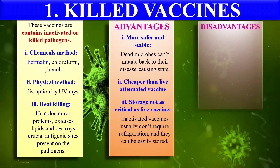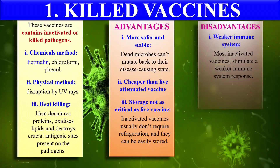Disadvantages: since we are using the killed pathogen, it will not give a strong immune response. It will only develop a weak immune response because the pathogen is in killed form. This is the main disadvantage of killed vaccines — they develop only a weaker immune response, or in simple words, they give very limited immunity.